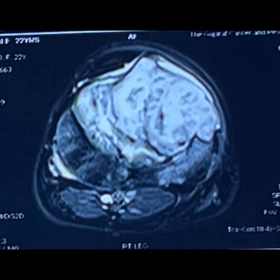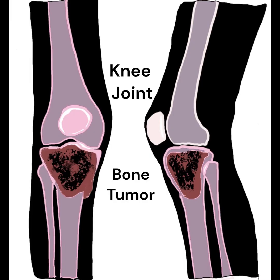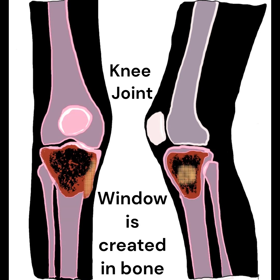A longitudinal incision is made over the affected area of the tibia. The goal of the surgery is to remove all visible tumor tissue within the bone cavity. A window is made in the affected bone, which is enlarged to look like a door of a house, allowing the surgeon to visualize the tumor properly.